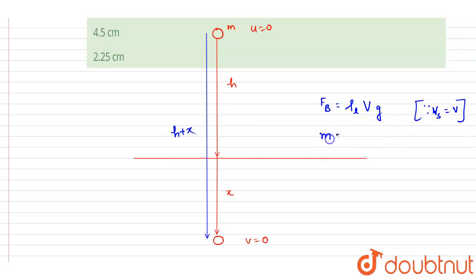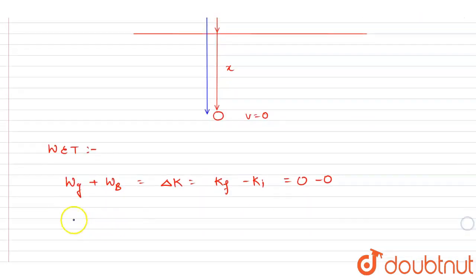force here. And if I write down the mass, mass is the rho of the object into the volume. So if I write down the work done by gravity, it will be simply mg(h + x). Now if